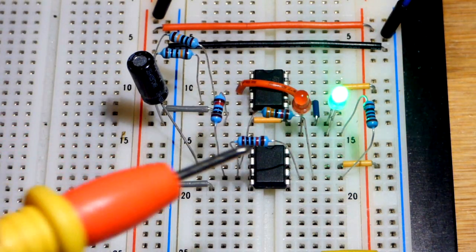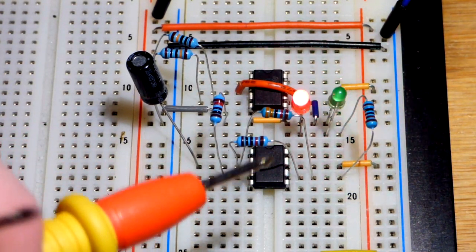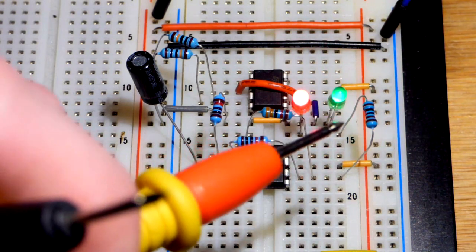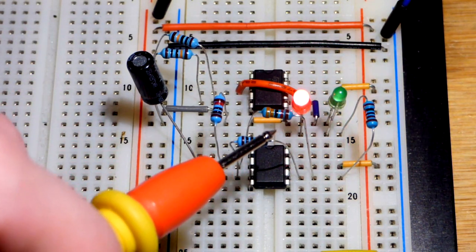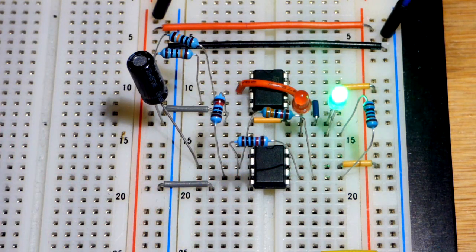In this video we're going to build a 741 op amp wired in astable mode. As you can see, the output keeps alternating high and low, and we could call this a square wave generator circuit.